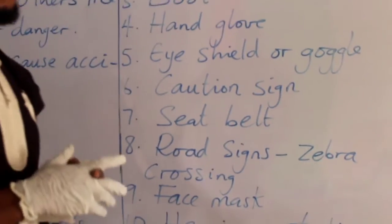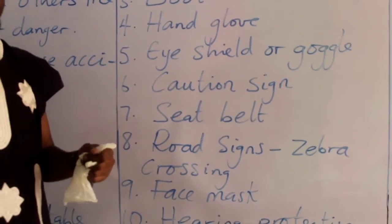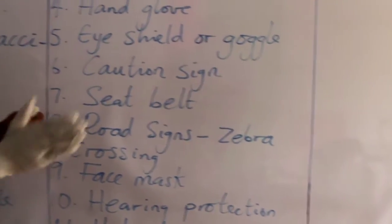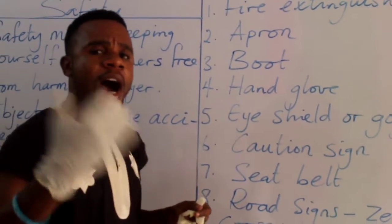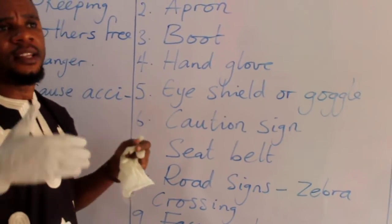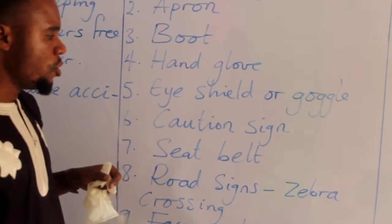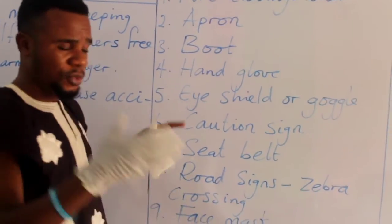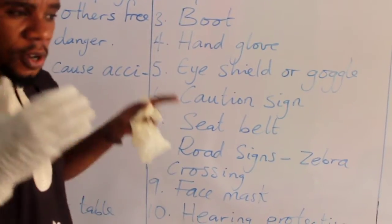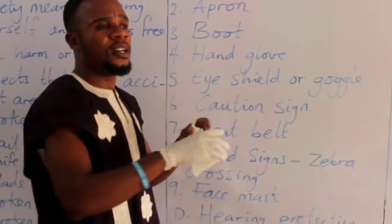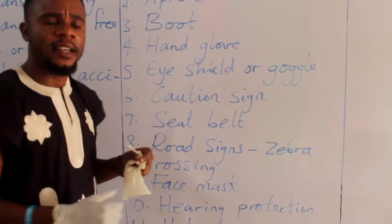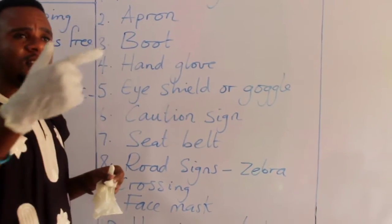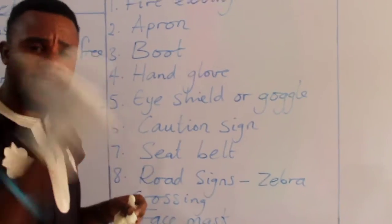The next one is caution signs. When you are driving, you see a lot of signs on the road used to mitigate accidents. When you see such signs, you know that there is a bend, a corner, or a hazard ahead. If your car breaks down, you bring out the triangular sign to signify that the vehicle is not moving, so that traffic coming behind you will be alerted and carefully divert without hitting your car.